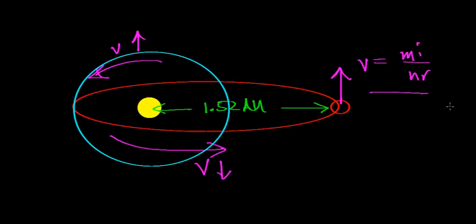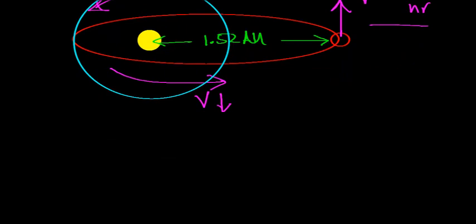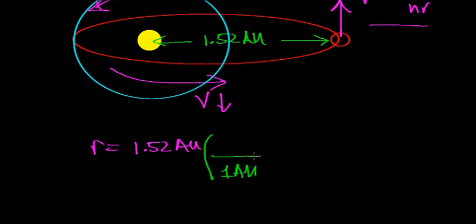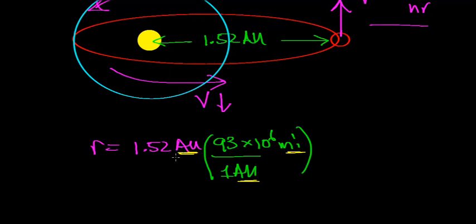Mars is 1.52 astronomical units from the Sun — about 1.5 times the Earth-Sun distance. We know that one astronomical unit equals 93 million, or 93 × 10⁶ miles. This is our conversion factor, taking us from astronomical units to miles. The astronomical unit cancels out, and when you multiply 1.52 × 93 million, you get about 1.4 × 10⁸ miles.